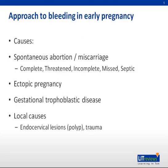The commonest causes of bleeding in early pregnancy include spontaneous abortions, also known as miscarriages, ectopic pregnancies, gestational trophoblastic disease, and certain local causes such as endocervical lesions.